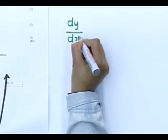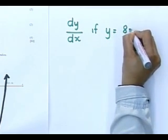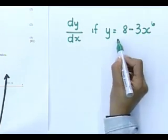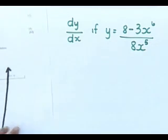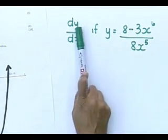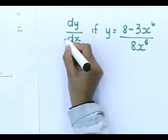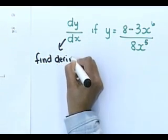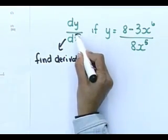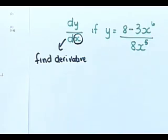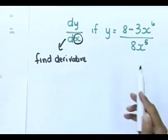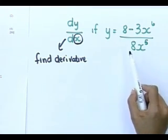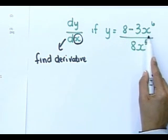The next question that we have is also a derivative question. And it says that we have to find dy dx if y is equal to 8 minus 3x to the power of 6 divided by 8x to the power of 5. Oh my goodness. First of all, what does dy dx mean? It means find the derivative. We have to find the derivative. That is what it means. And look at the bottom. We have to find the derivative with respect to x.